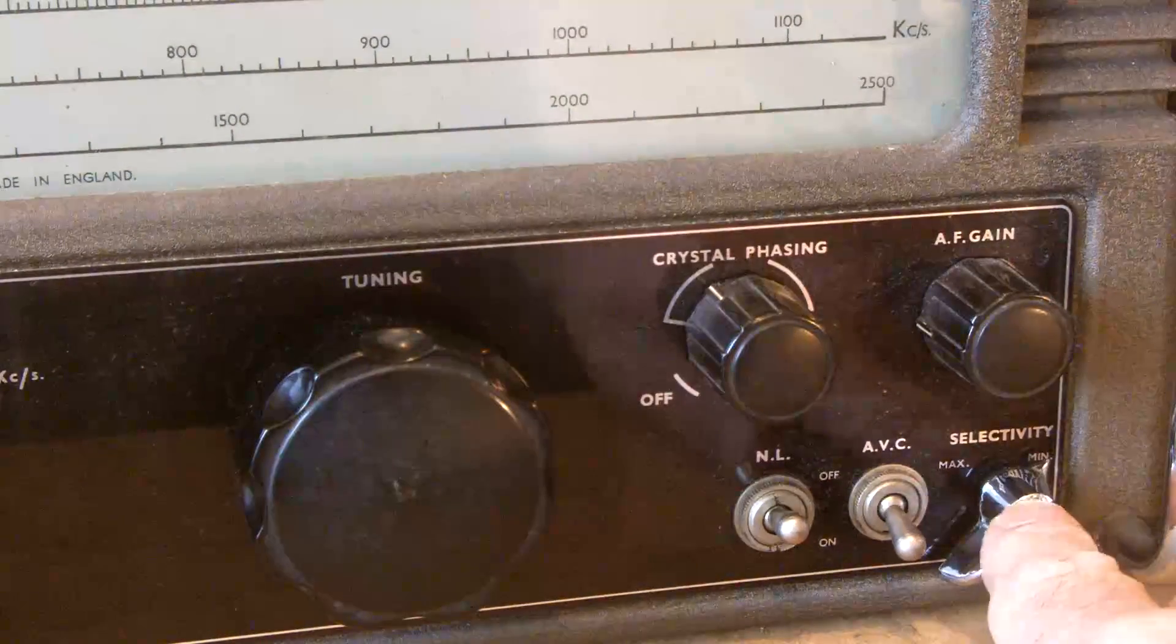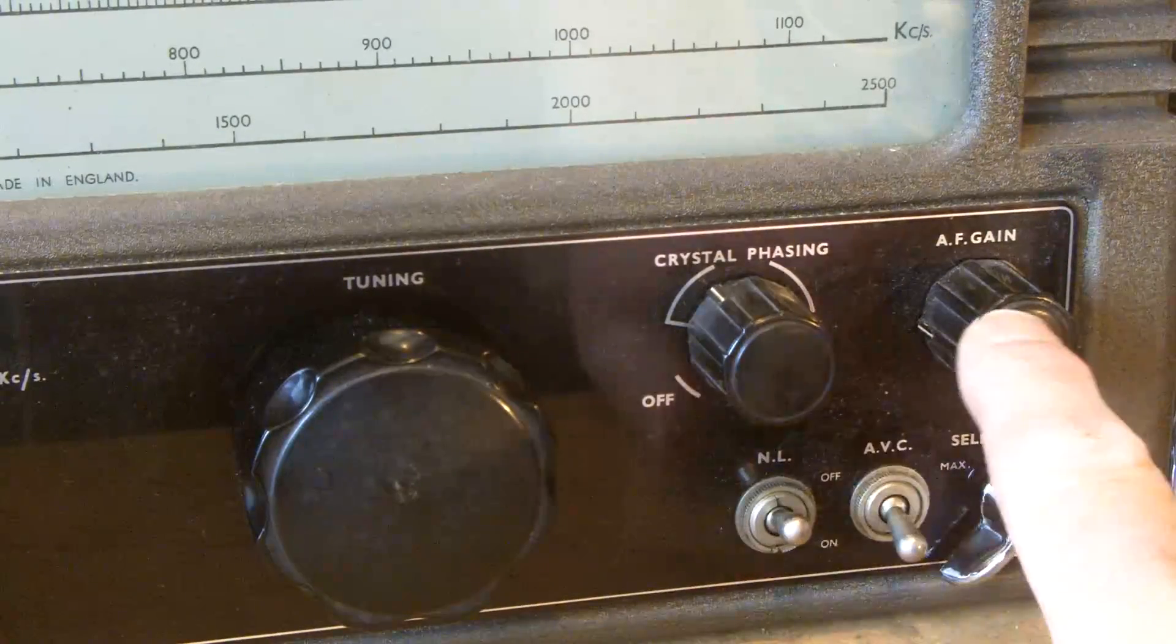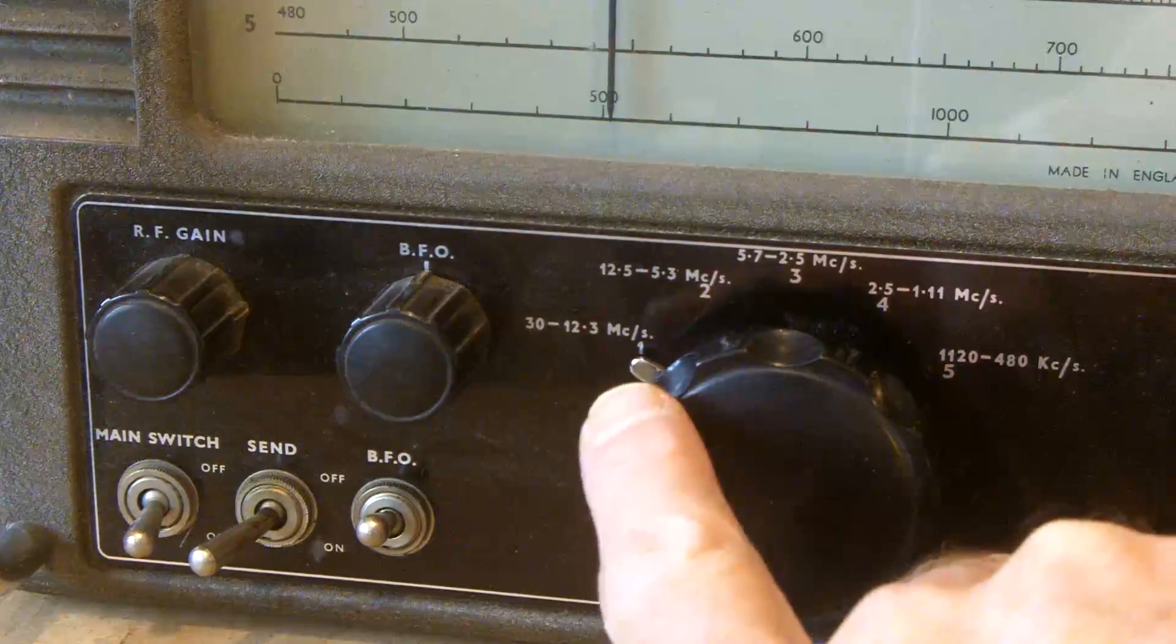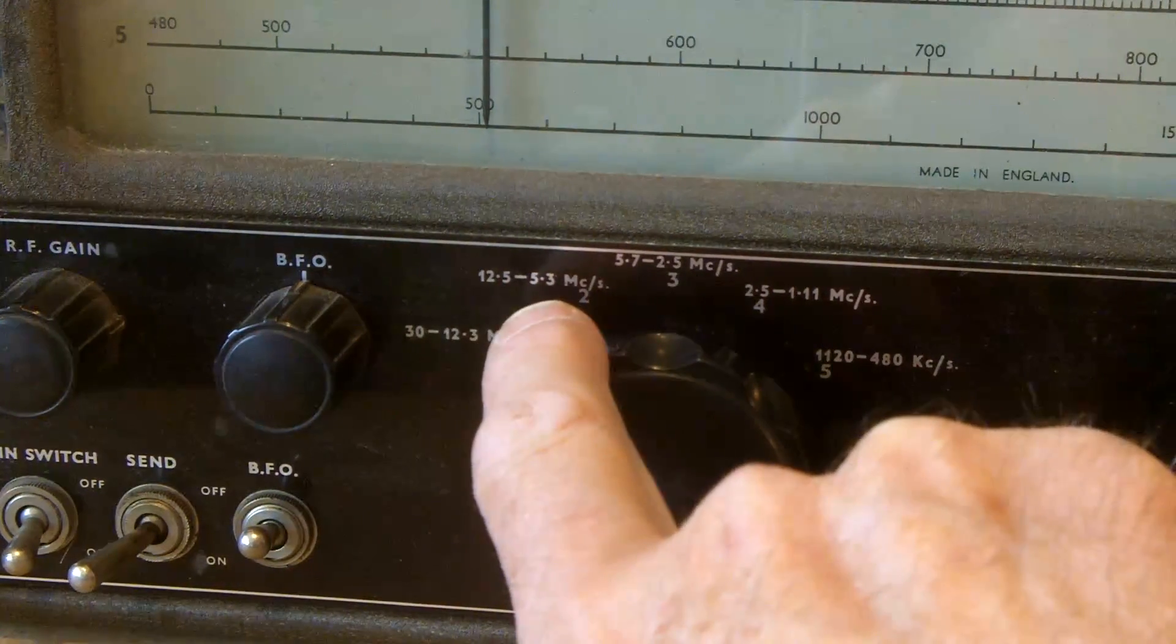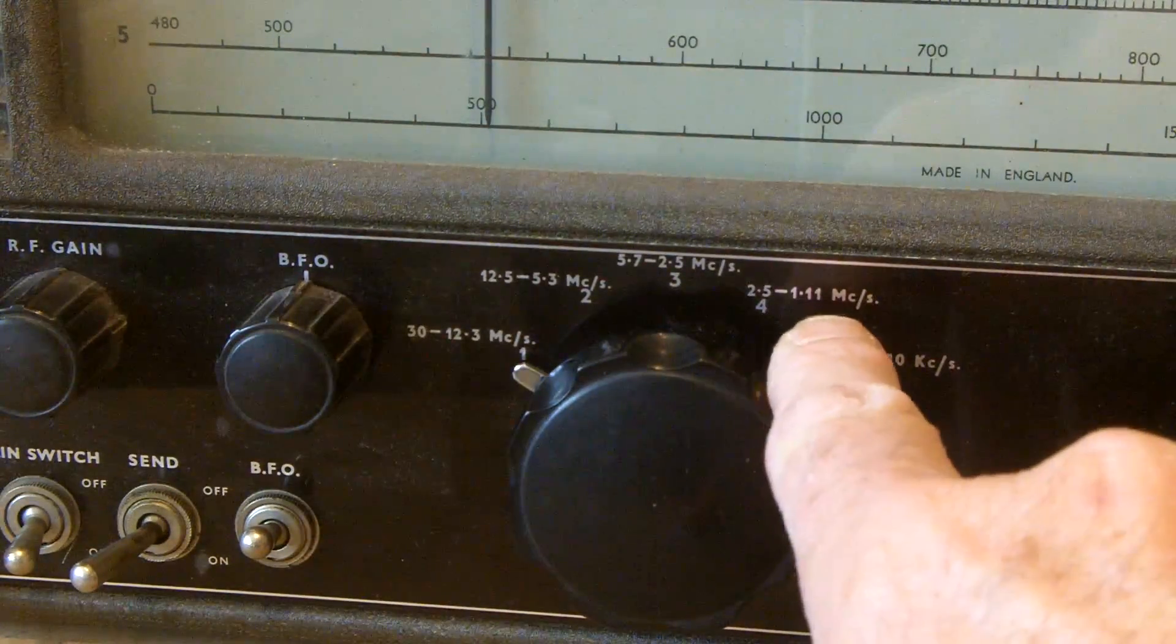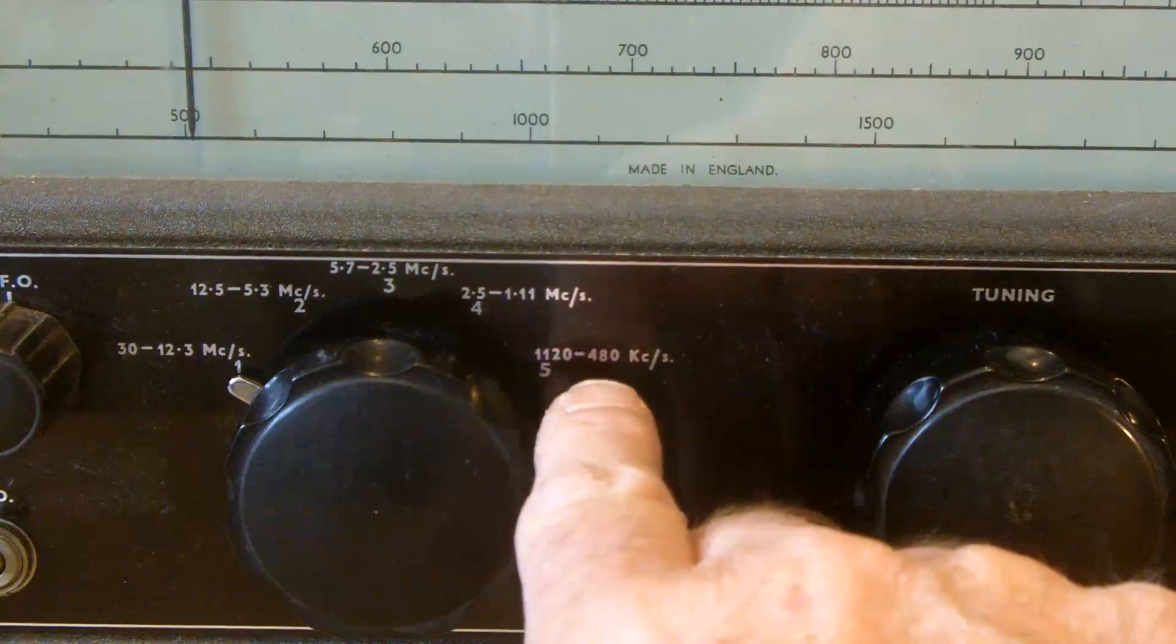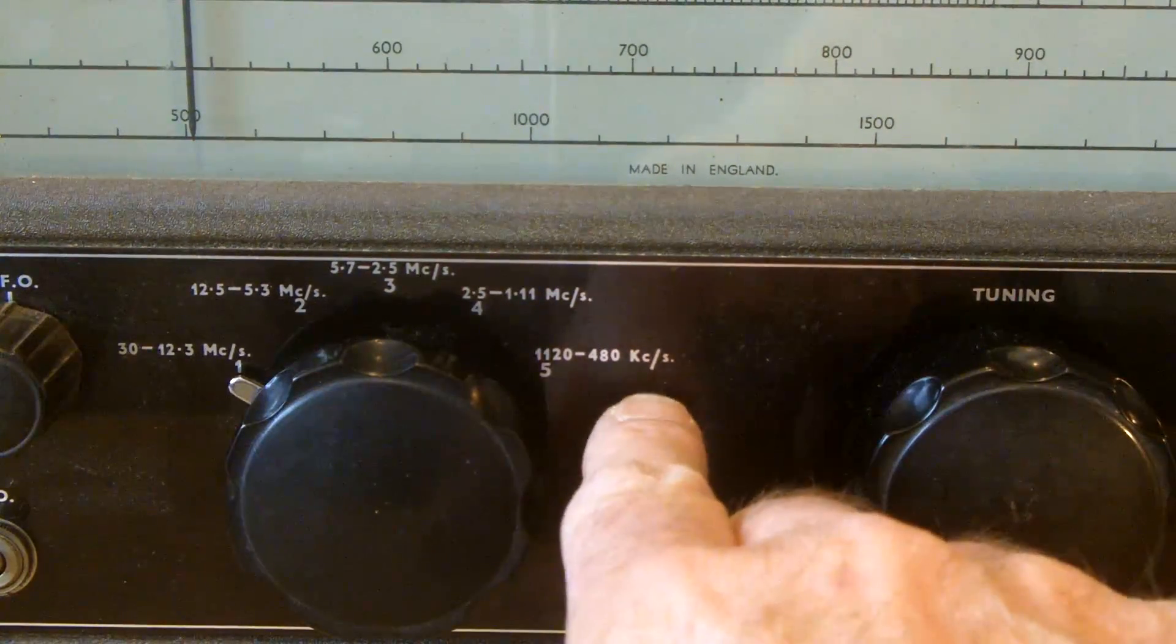And then the other controls: we've got selectivity maximum and minimum, AVC, noise limiting, AF gain, crystal phasing that ought to be off, the tuning knob, and then the five bands which is 30 to 12.3, 12.5 to 5.3, 5.7 to 2.5, and 2.5 to 1.11 megahertz. All those are megahertz. And then band 5 is 1120 down to 480 kilohertz, or as it's got there, KCs. This radio would have been made in the 1950s, like me.